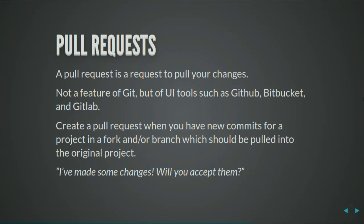In Drupal, you're often working on GitHub or GitLab and aware of pull requests. A pull request is a request to pull your changes — this isn't part of Git itself, but something added to the UI tools as a nice formality to discuss the change. You create a pull request when you have new commits in a fork which should be pulled into the original project.